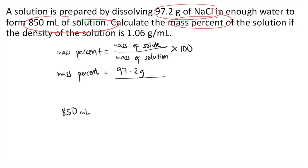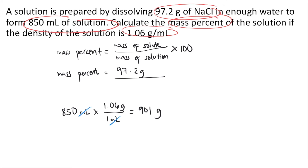So we need to convert the volume into mass using the density of the solution. For every 1 ml of the solution, it's equivalent to 1.06 grams, so the ml units cancel out. 850 times 1.06 equals 901 grams.